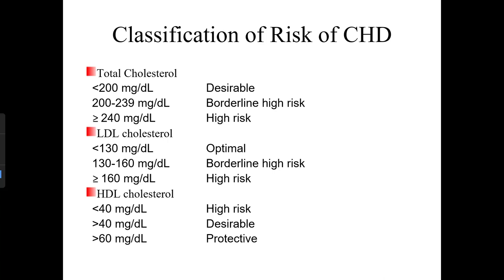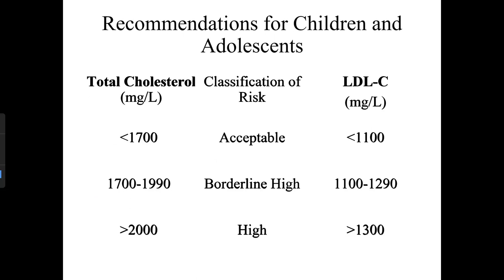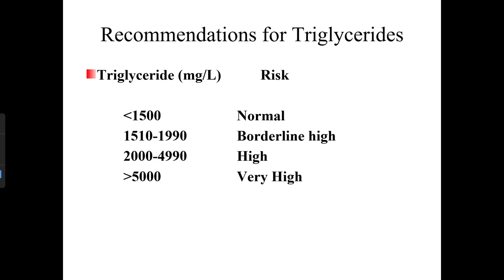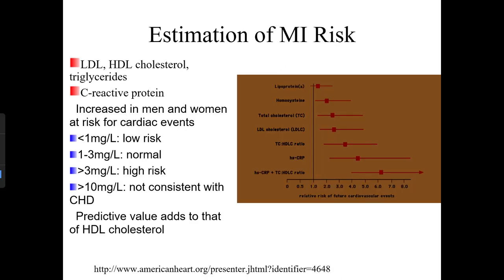Classification of CHD risk: total cholesterol less than 200 mg/dL is desirable; 200–239 is borderline high; greater than 240 is high risk. LDL less than 130 is desirable; 130–160 is borderline high; greater than 160 is high risk. HDL less than 40 is high risk; greater than 40 is desirable; greater than 60 is protective. For children and adolescents, slightly higher values are acceptable since they are still growing, and units are in mg/L rather than mg/dL.